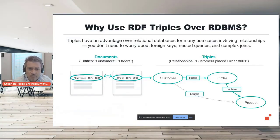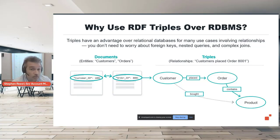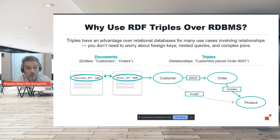One of the first decisions they had to make was at the data level — how to represent what all these different partner data sets really look like. They could have gone the traditional relational database path, but very early on it became much easier and simpler to model all these relationships using a triple store. They were able to take away the complexity of different relationships, put them in a triple store, and express how customers were communicating through this method — sometimes referred to as a digital twin — creating a digital representation of all the different languages their partner networks were using.